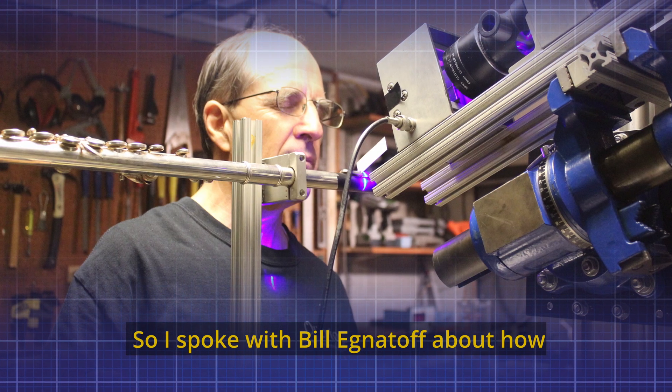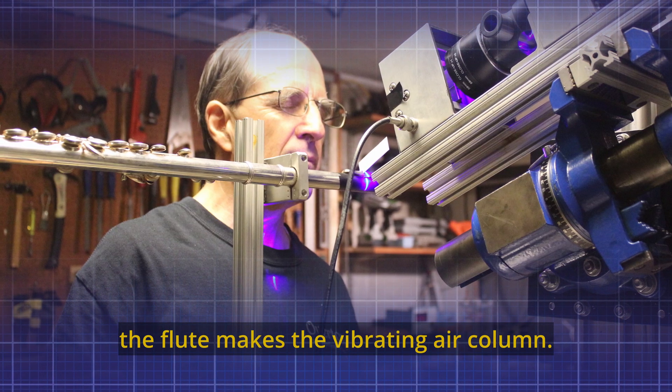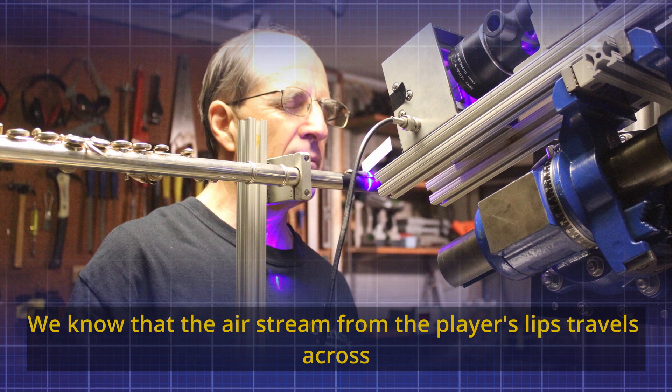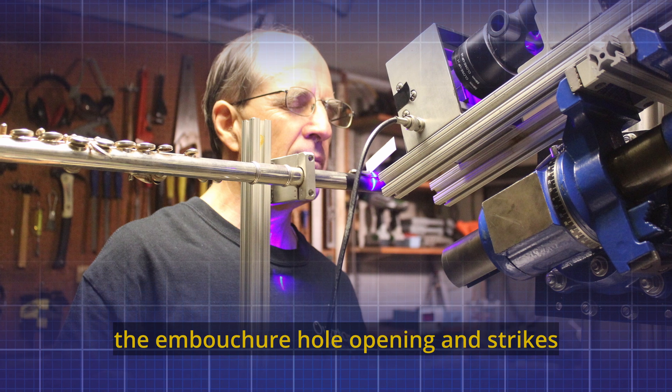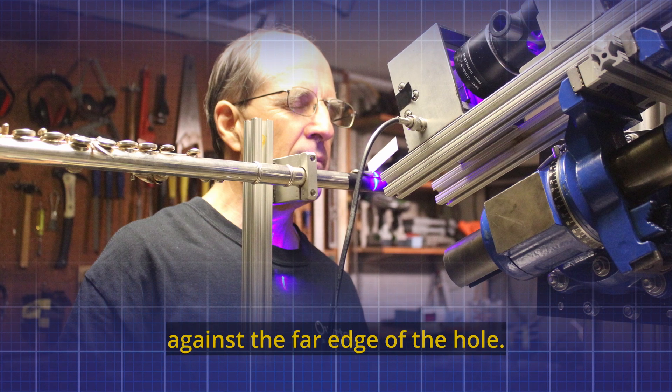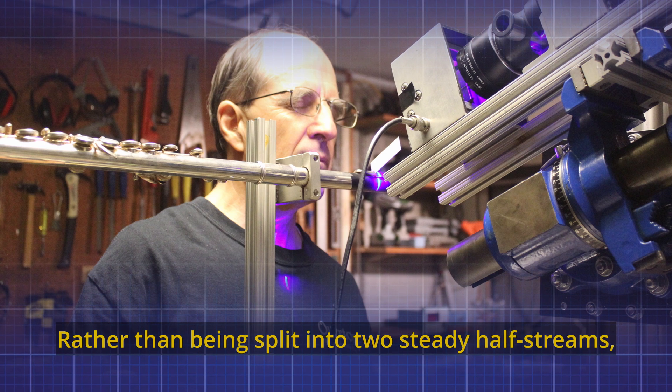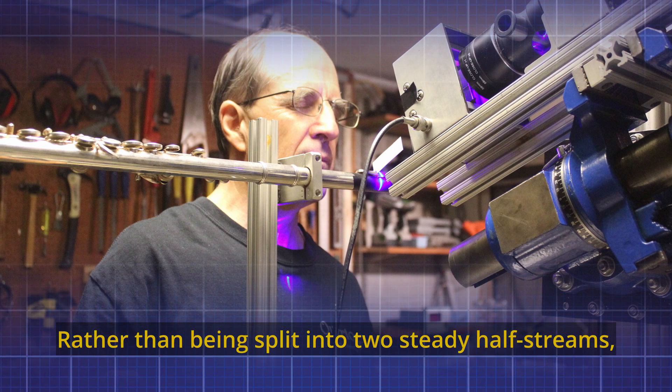I spoke with Bill Egnatoff about how the flute makes the vibrating air column. We know that the air stream from the player's lips travels across the embouchure hole opening and strikes against the far edge of the hole.